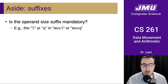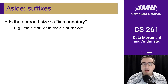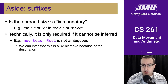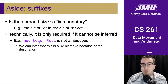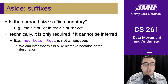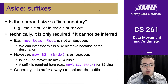A couple of caveats: the operand suffix is not mandatory — technically it's only required if it cannot be inferred. Like we did in the first assembly lab, we can write just 'move' and then the source and destination operands. For example, 'mov EAX, EDI' is not ambiguous — we're moving from a 32-bit register to another 32-bit register, and the assembler can infer that this is a 32-bit move. That said, it's safer to always include the suffix, because there are some cases where it's ambiguous.